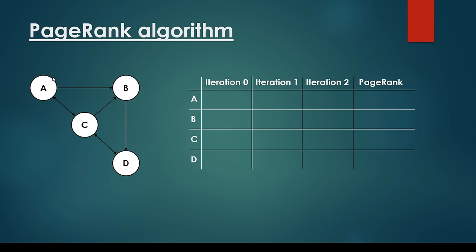In this lecture we are going to talk about a concrete example of how to calculate page ranks for a given network of websites or web pages. In this case we have four web pages A, B, C and D. As you can see, we are able to model the network with a directed graph.